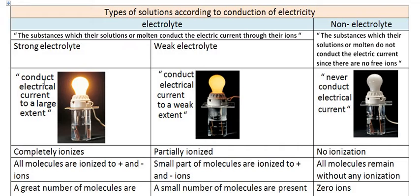The electrolyte may be of two types. The first one is called a strong electrolyte. This is the solution which conducts electricity to a great extent because there is a greater amount of ions, so the conduction of electricity is excellent — very good. In this solution the lamp will be glowing strongly, as shown in the image.